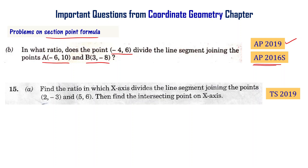Find the ratio in which the x-axis divides the line segment joining the points 2 comma minus 3 and 5 comma 6. Then find the intersecting point on the x-axis. This is from the Telangana final exam 2019. Let us now solve these two problems.